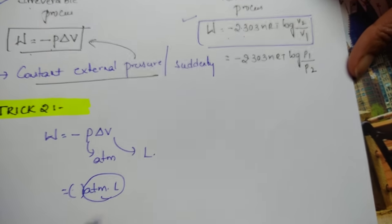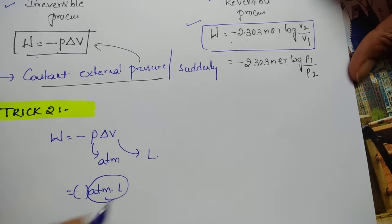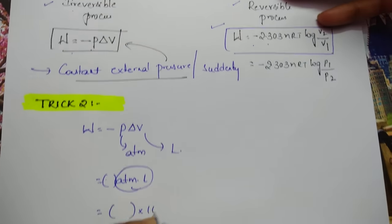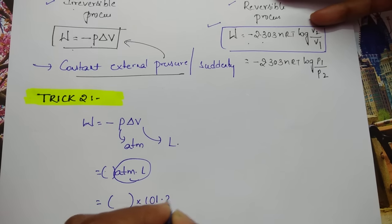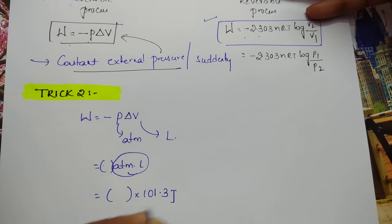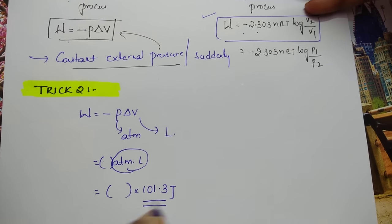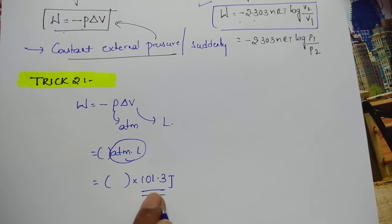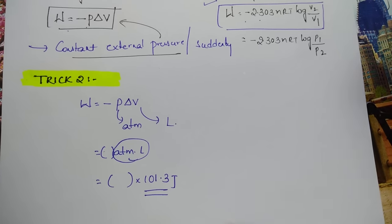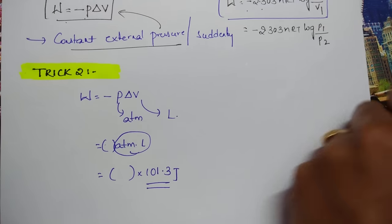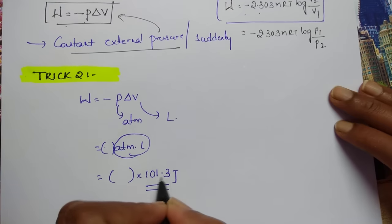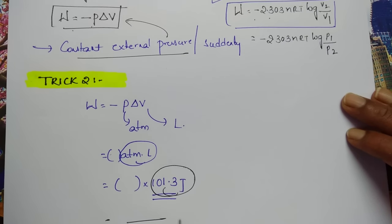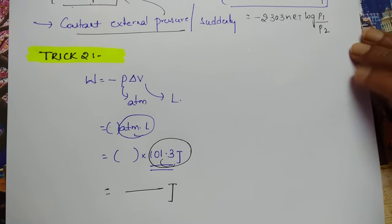The trick is: you have to multiply by 101.3 Joules. Remove the ATM·liter unit and multiply by 101.3, then you will get your final answer in Joules.